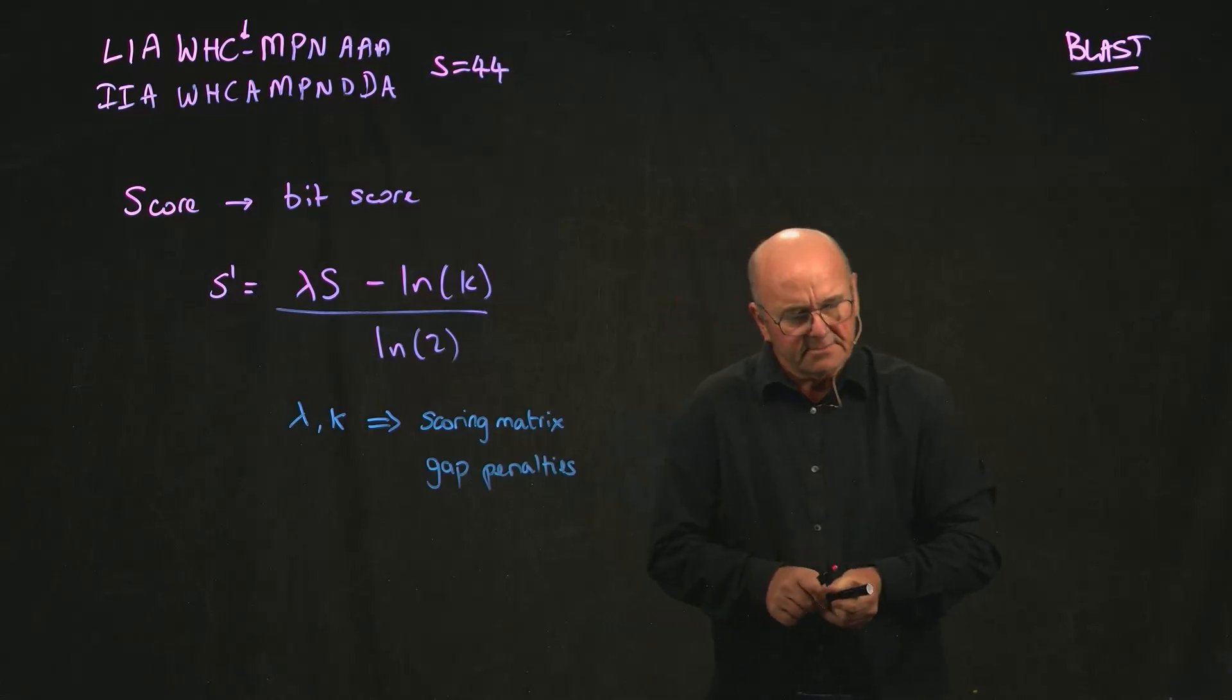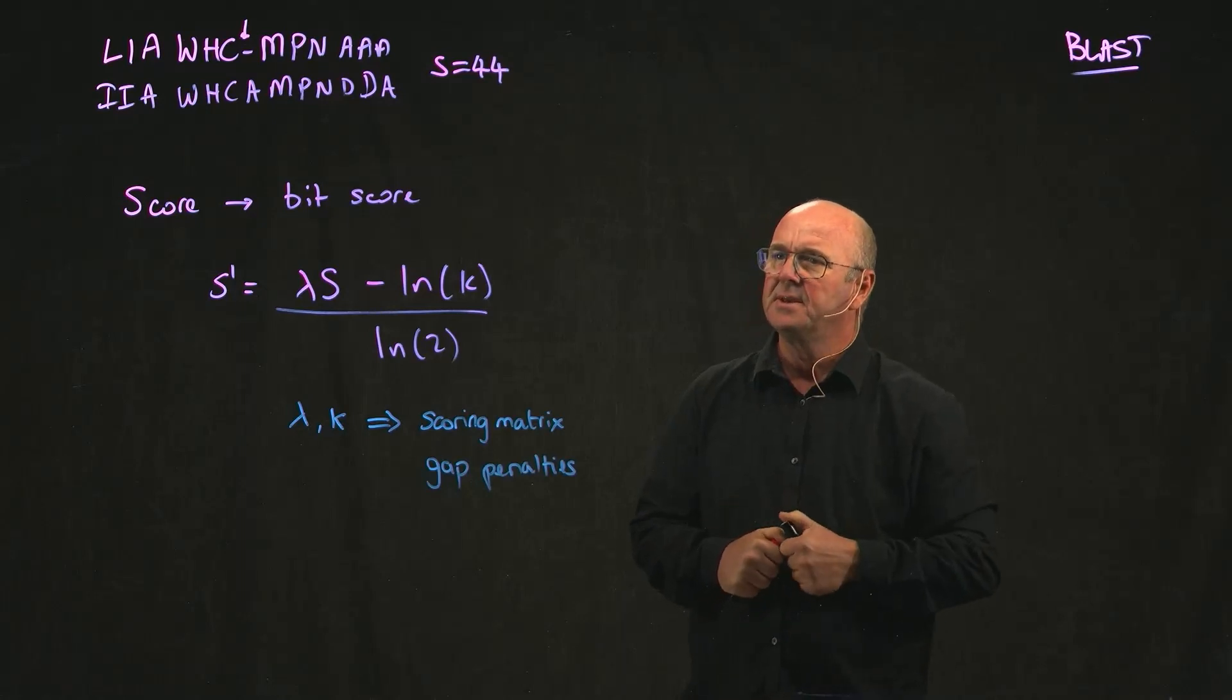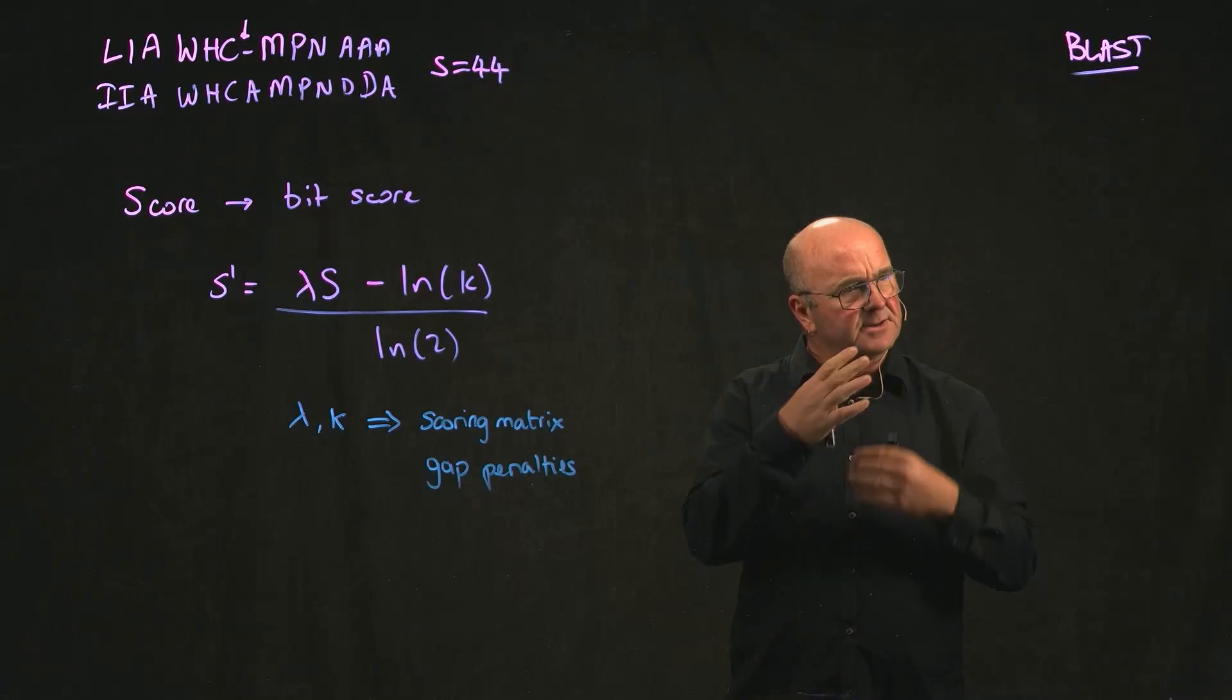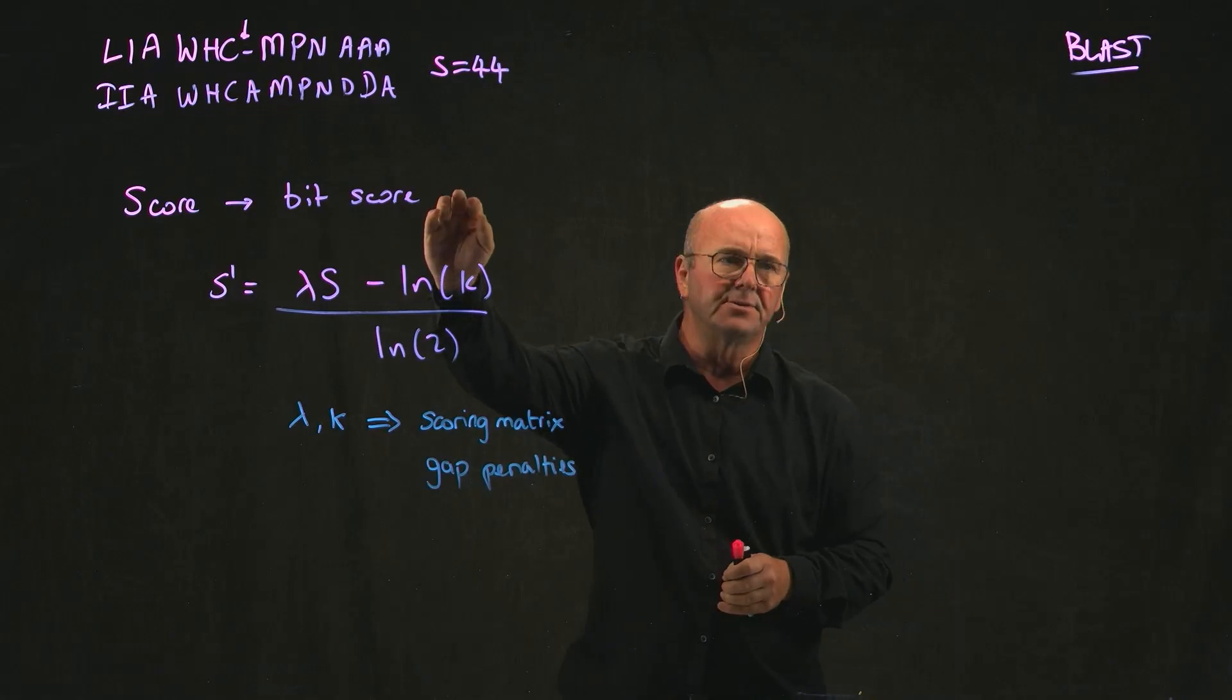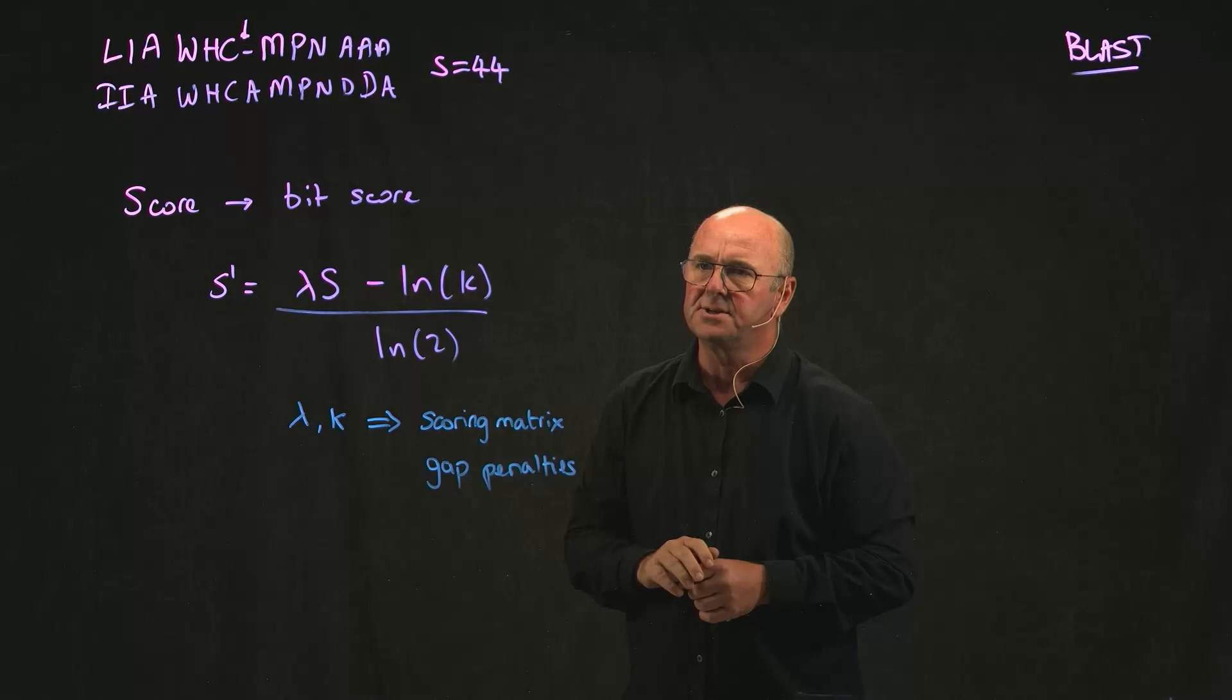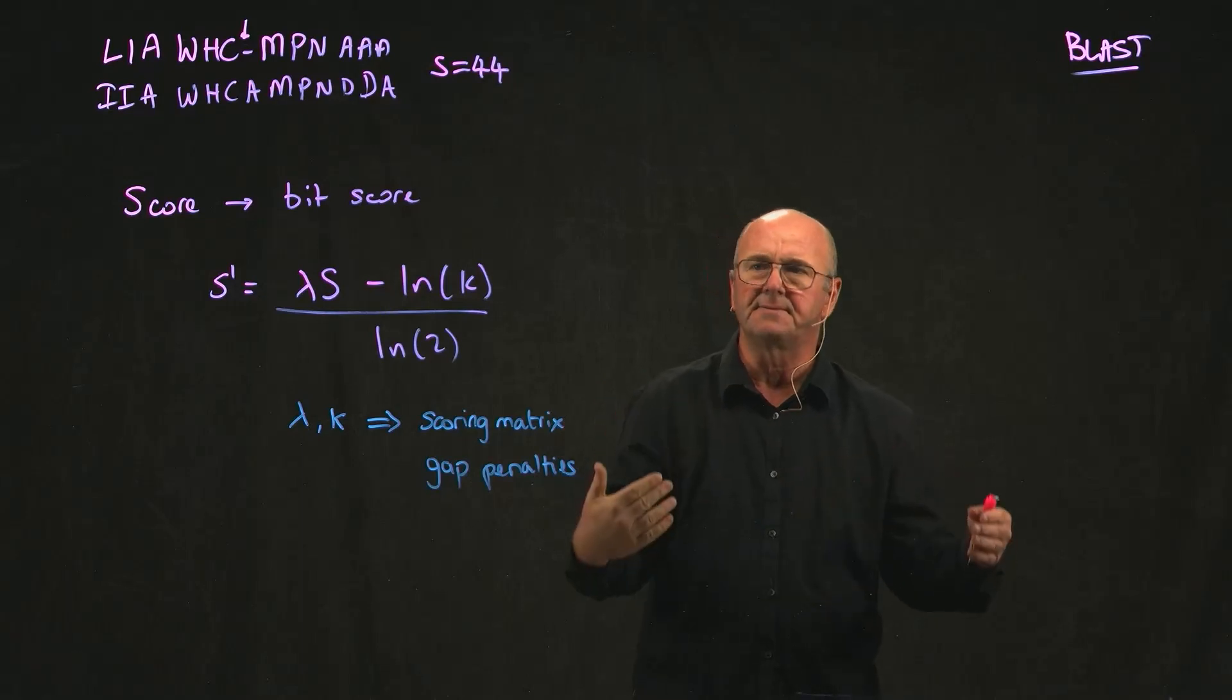And of course remember, each scoring matrix is different. That's sort of the whole point of having different scoring matrices, is that for each scoring matrix you get different pairwise scores between pairs of amino acids. And so the idea of the bit score is that you're normalizing it based on these different parameters that you can change, so that once you've got a bit score, it's much more comparable between different matrices.